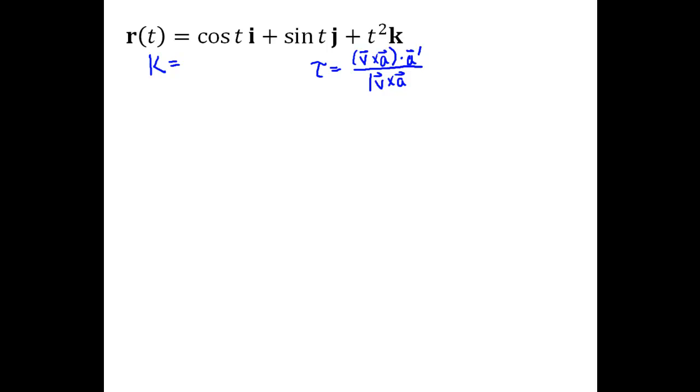So if I'm going to use this formula for torsion, I might want to choose a formula for curvature that allows me to reuse some of the same calculations. So the formula I'm going to choose for curvature is magnitude of v cross a divided by magnitude of v cubed.